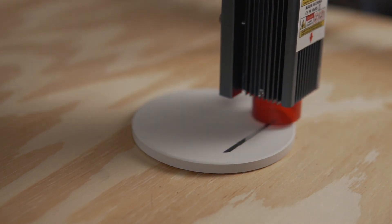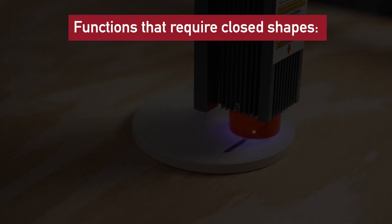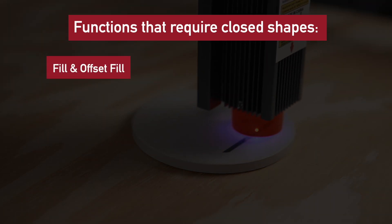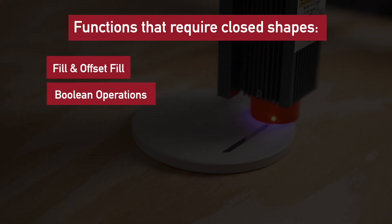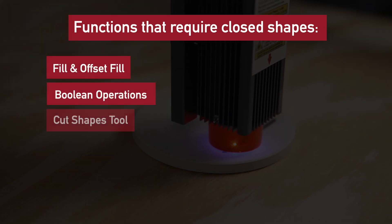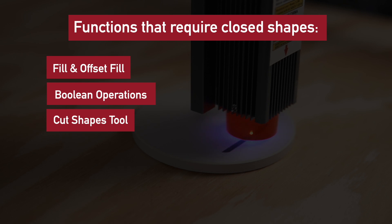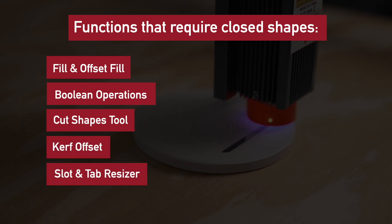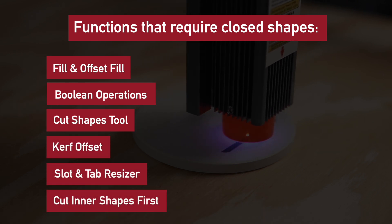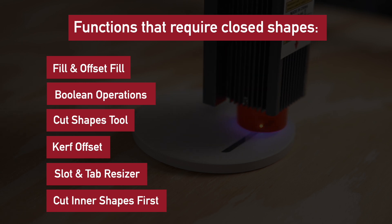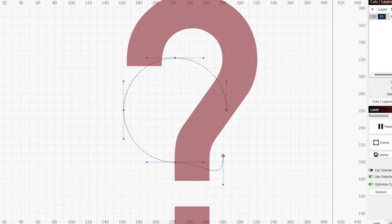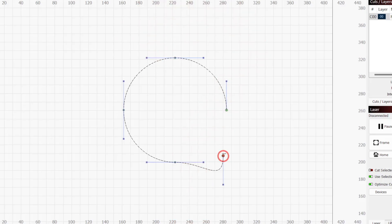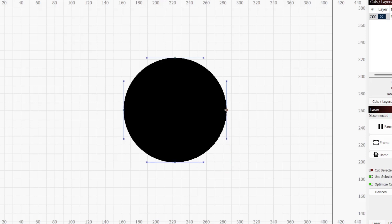Some functions that require closed shapes are fill and offset fill, all Boolean operations, the cut shapes tool, kerf offset, the slot and tab resizer, and the cut inner shapes first optimization setting. But what makes a shape closed? Simply put, a shape is closed when its starting and ending points are the same.